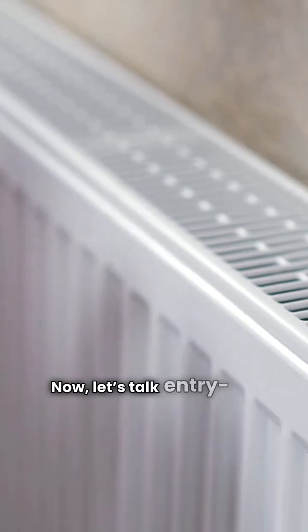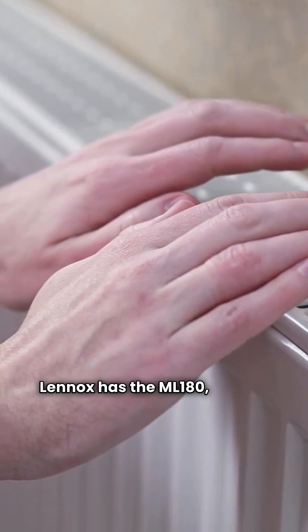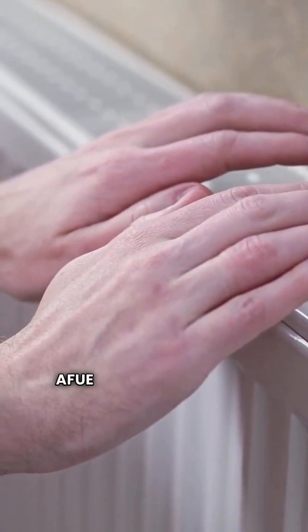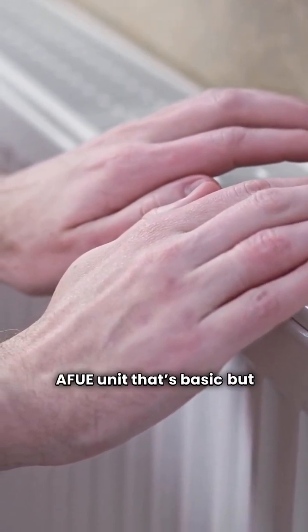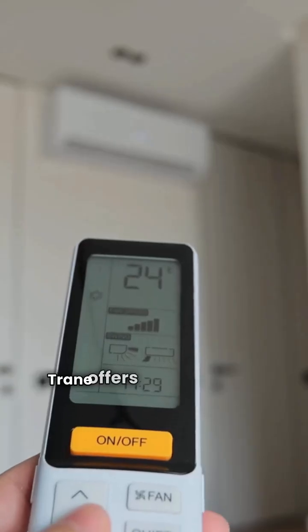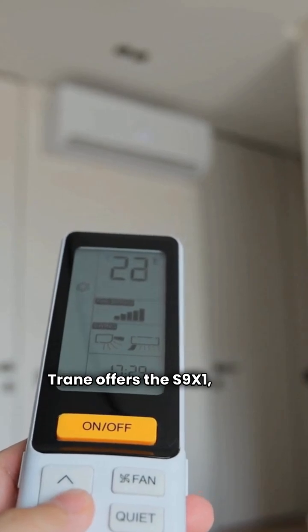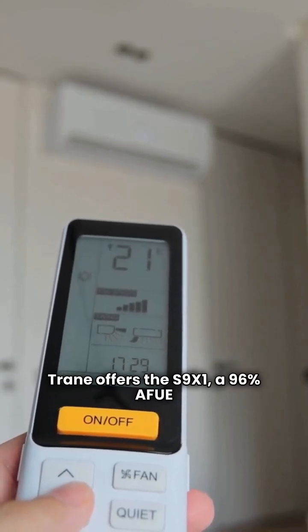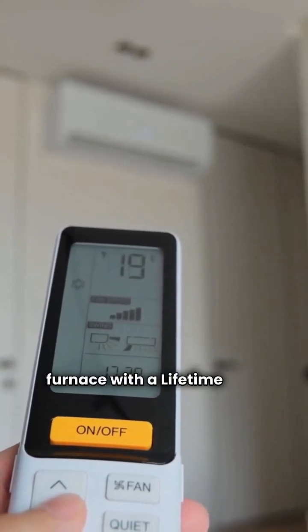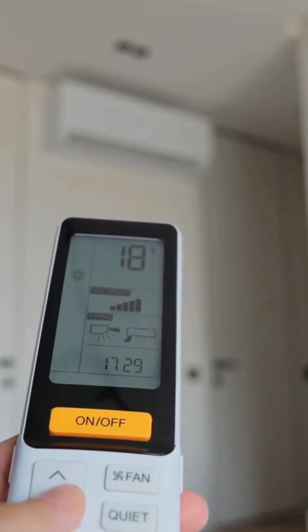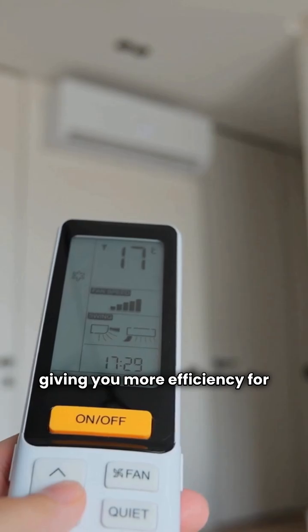Now, let's talk entry level. Lennox has the ML180, an 80% AFUE unit that's basic but reliable. Trane offers the S9X1, a 96% AFUE furnace with a lifetime heat exchanger warranty, giving you more efficiency for your buck.